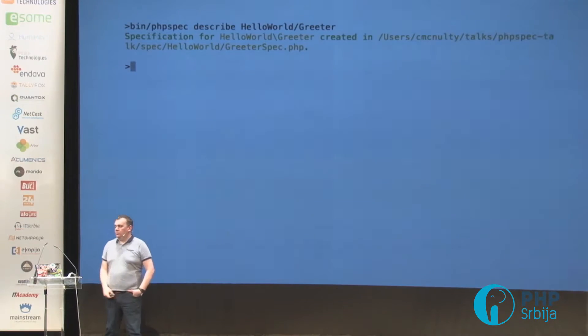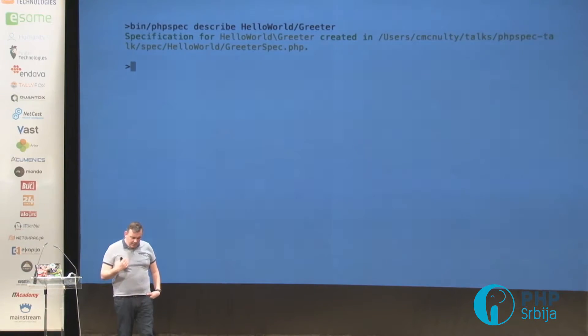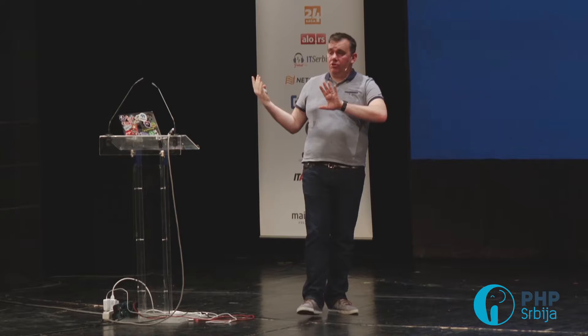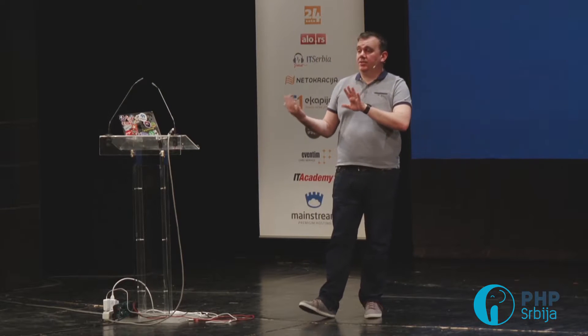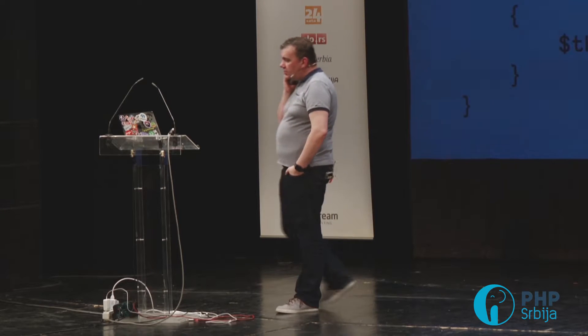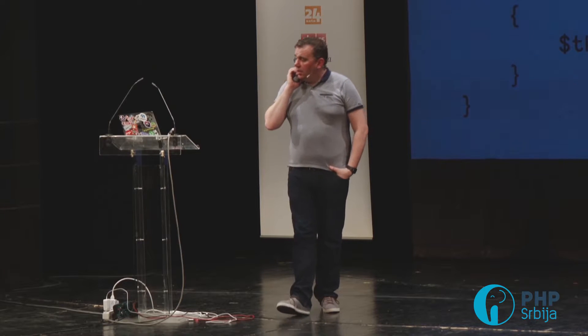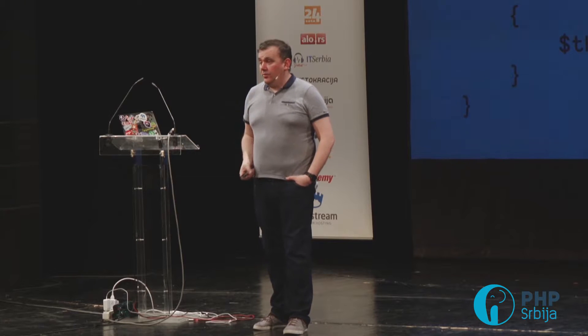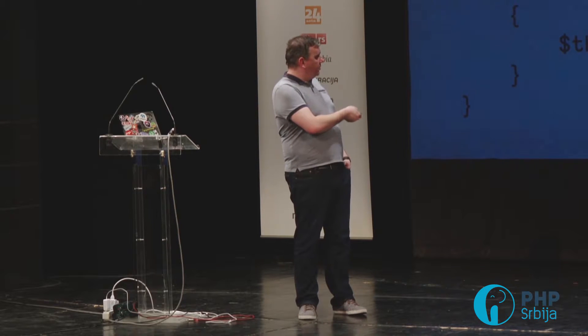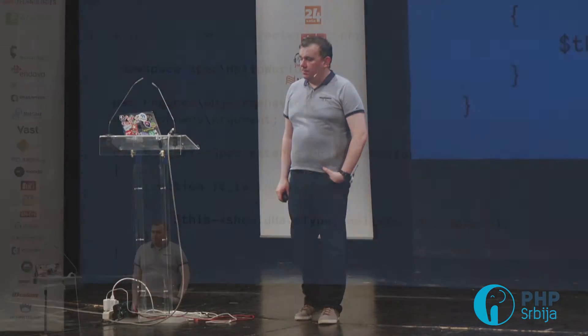Type 'phpspec describe' — I use a forward slash for the namespace because using backslashes in bash is difficult — and the tool generates a specification. Something to note is I haven't told the tool where to put this specification. It's assumed that the structure of my specifications in the spec folder mirrors the structure of the classes in my source folder. That's an assumption we can make because this is just for testing classes one at a time. The specification that's generated has only one example: that the object can be initialized — it's initializable.